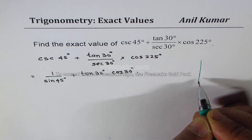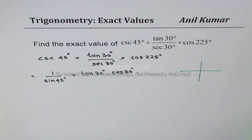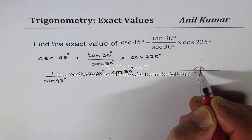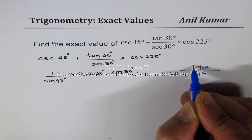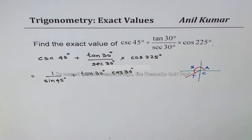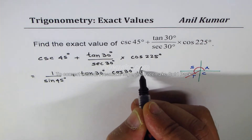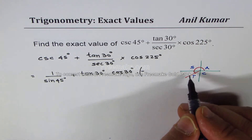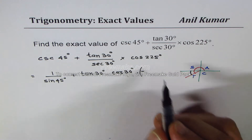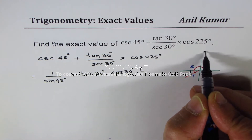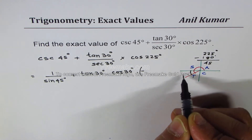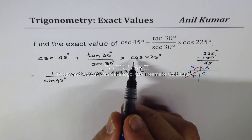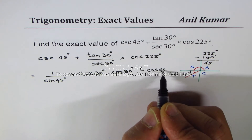Cos of 225 — what does that mean? 225 is an angle in quadrant 3. In quadrant 3, only tan is positive; cos is negative. So we expect a negative answer for cos 225. To find the acute angle, we do 225 degrees minus 180 degrees, which gives us 45 degrees. So I could write this as minus cos 45 degrees.